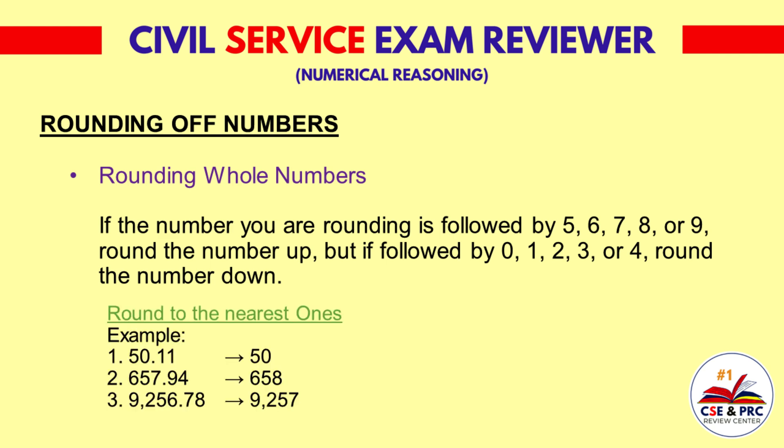Now let's consider the given examples. Let's round to the nearest ones. Example 1: If we round 50.11 to the nearest ones, the result will be 50. Example 2: 657.9 — the result will be 658. Example 3: 9,256.78 — the result will be 9,257.